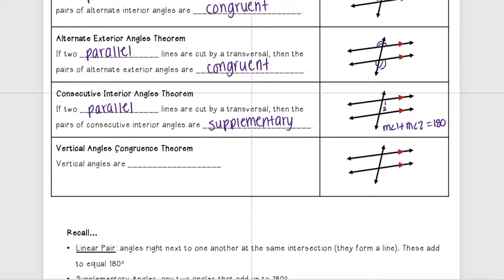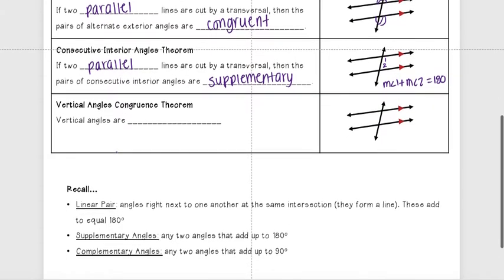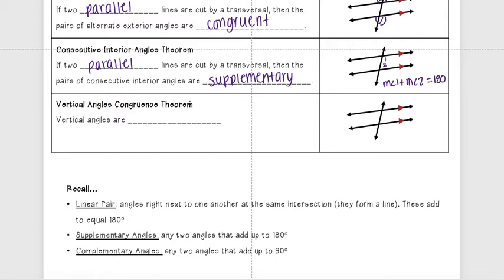The last one is from last chapter — vertical angles. The Vertical Angles Congruence Theorem says that vertical angles are congruent. Vertical angles are the ones that are opposite each other; they make an X shape. Those two angles would be equal. It's important to remember for this chapter — we are going to be using vertical angles a lot.